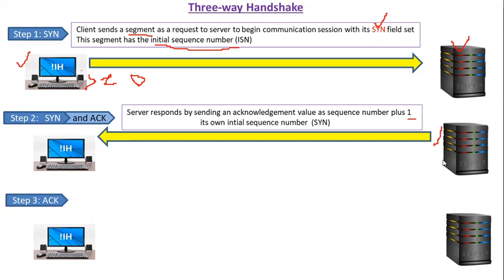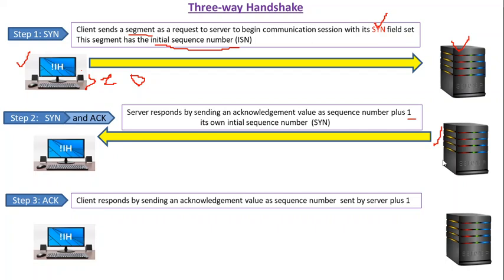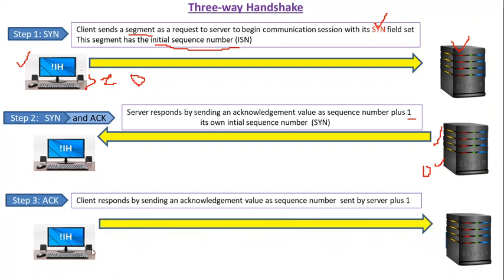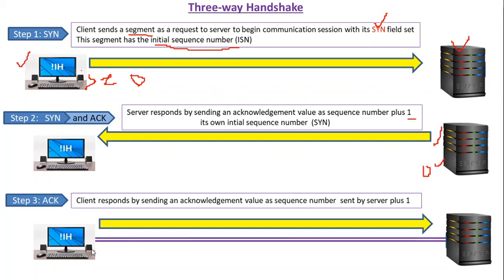In the third and final step, the client sends an acknowledgement value equivalent to the sequence number sent by the server plus one, and this acknowledgement value is sent back to the server machine. This completes the three steps of the three-way handshake. Once these three steps are complete, a connection is established between the client and the server, and after that they can send the actual data using this connection.